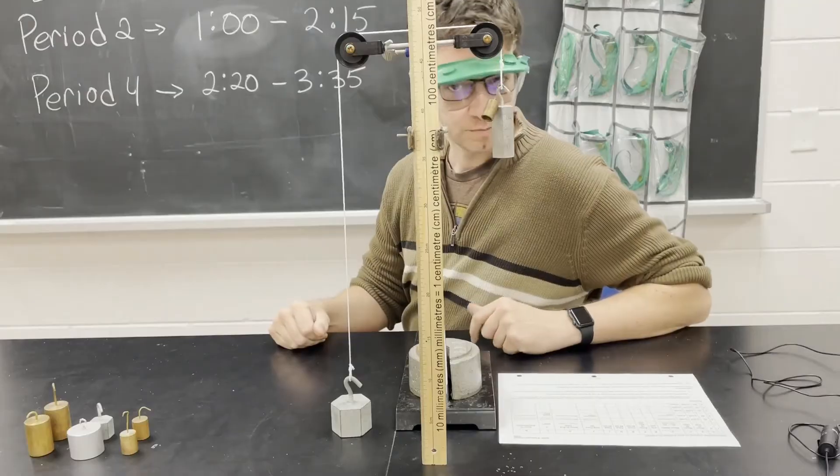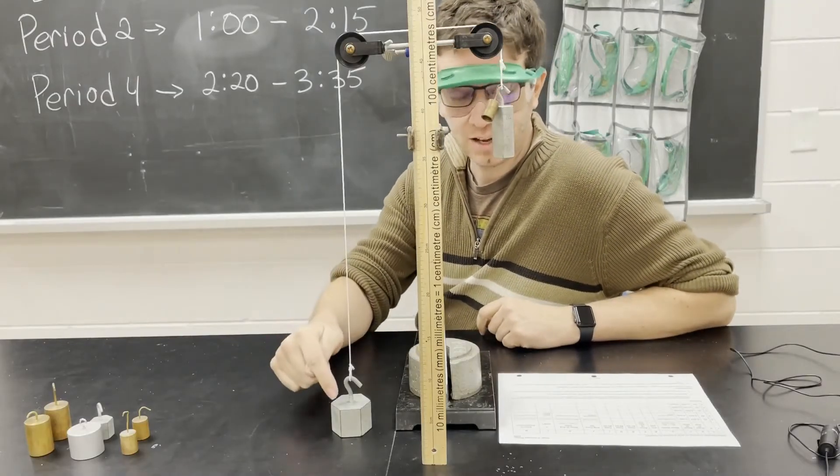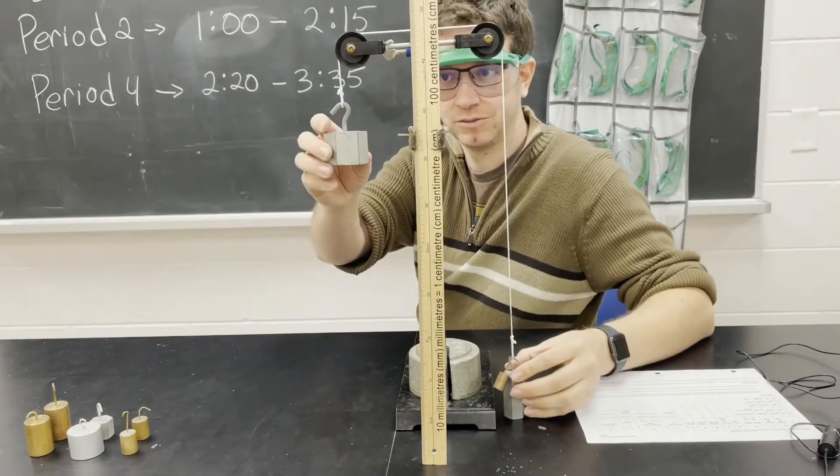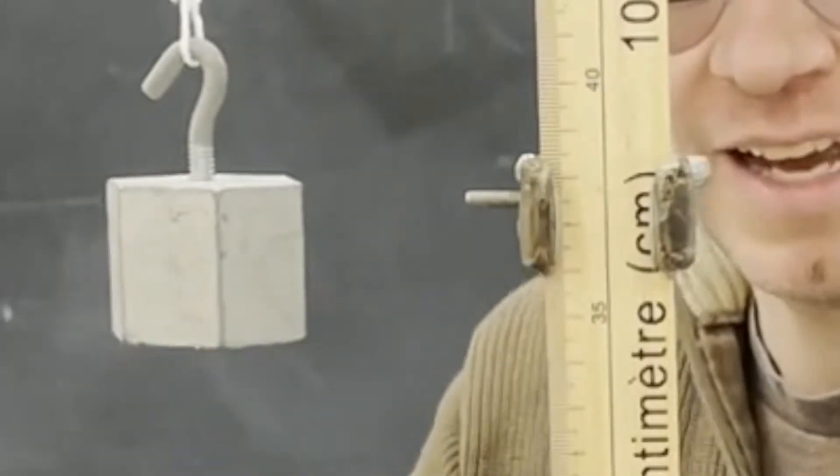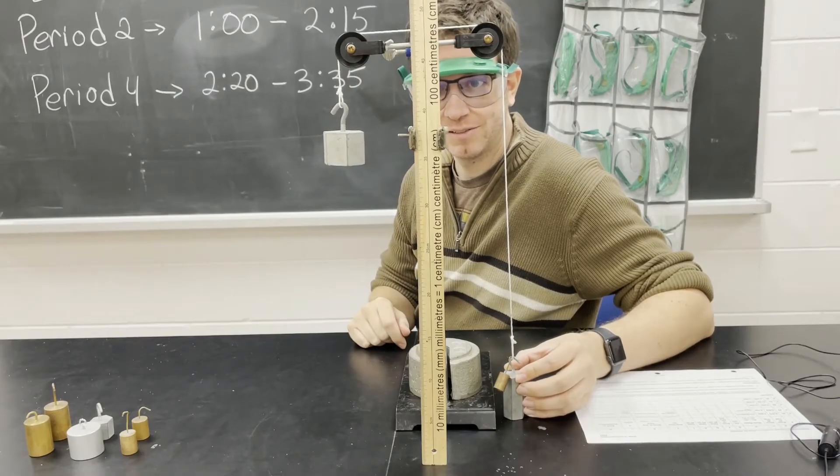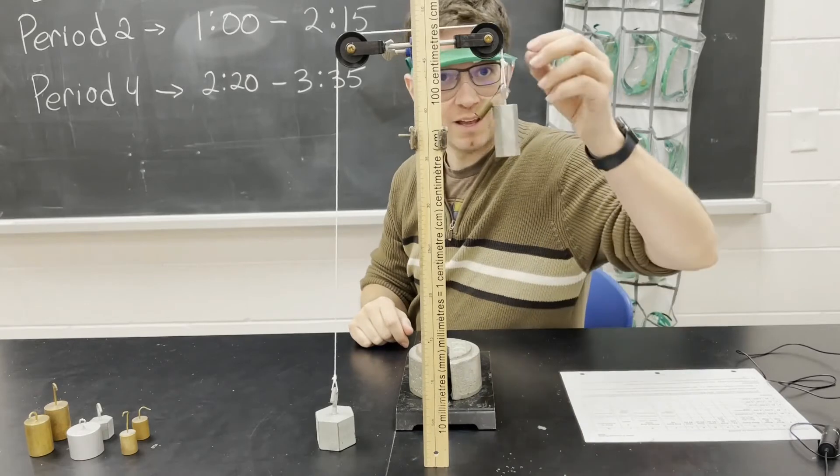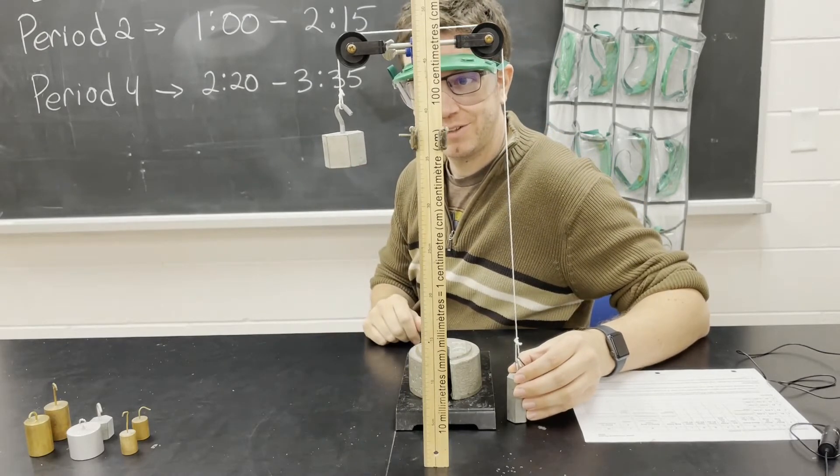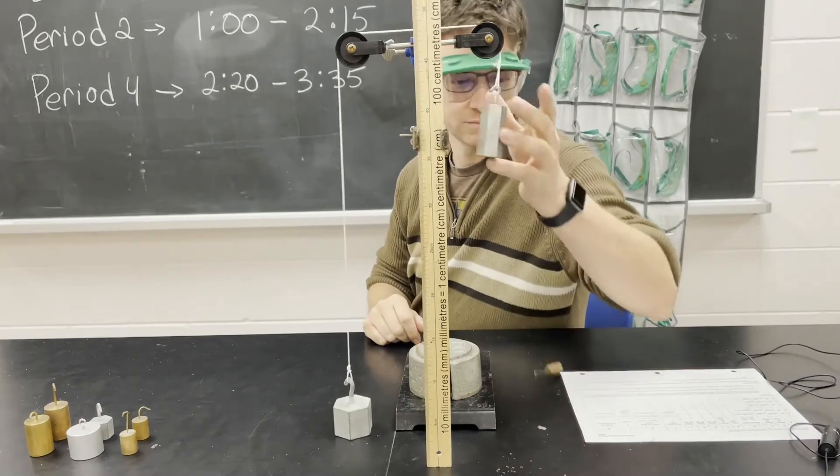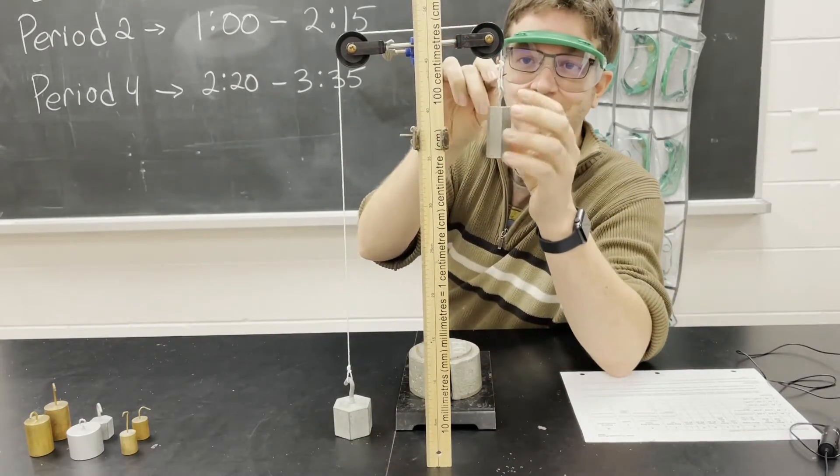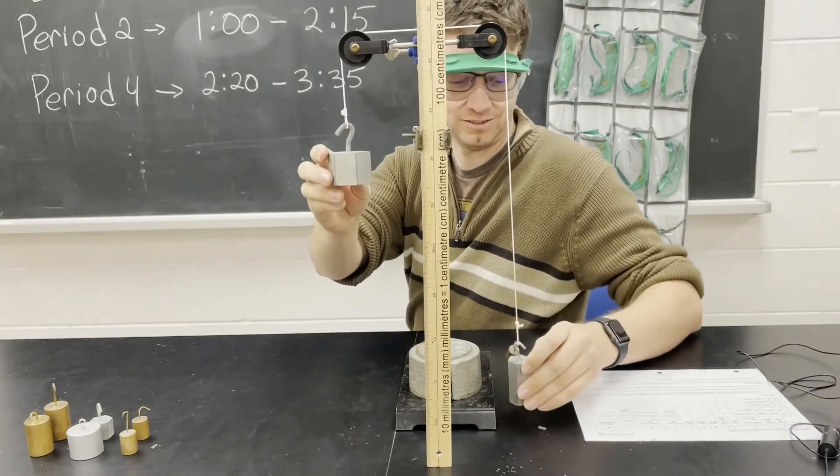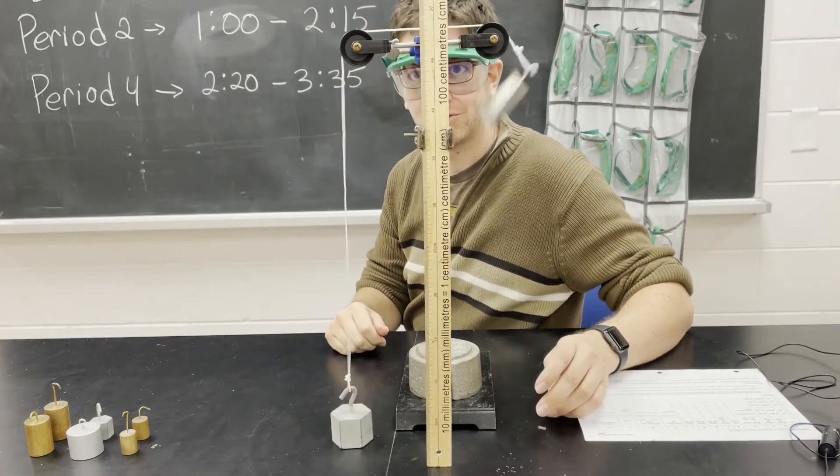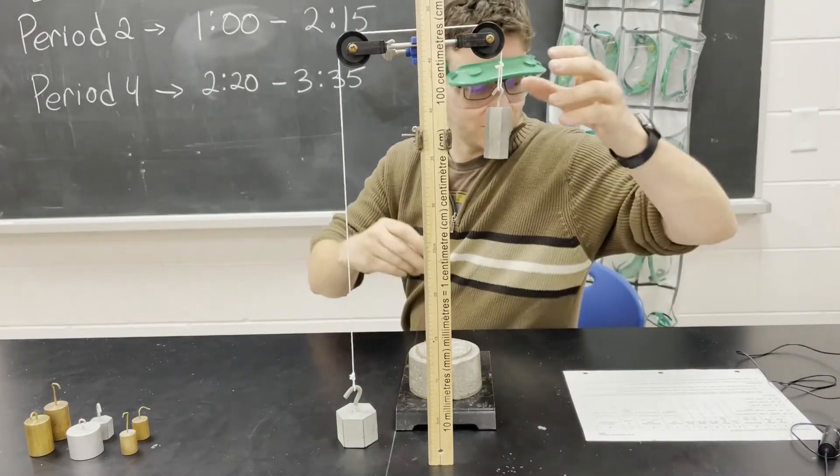Alright, let's get started with the experiment. So first we're starting with a 500 gram mass here and 270 gram mass here. You can measure the height, and we'll drop. And we're going to do that two more times, and you can find the average in time. Alright, let's move on to the next set.